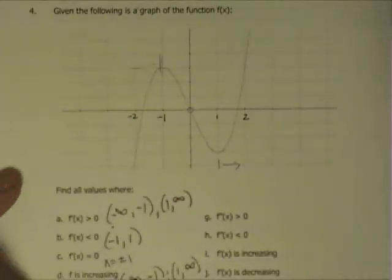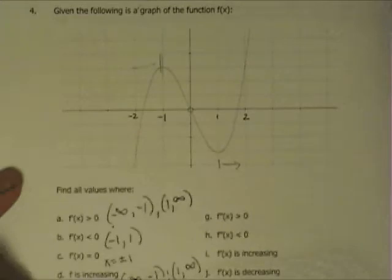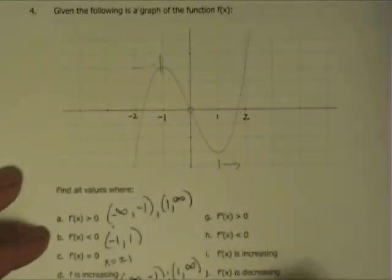F is decreasing then the same intervals that the derivative is less than 0. So, that's from negative 1 to positive 1.